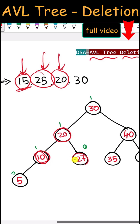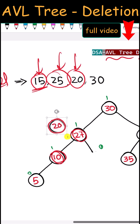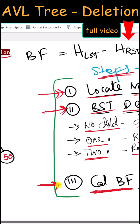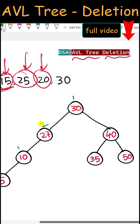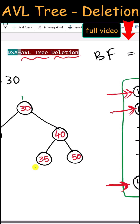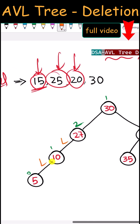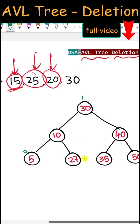We replace node 20 with its in-order successor and then delete that node. After recalculating balance factors, one node's balance factor is out of range, so we must perform a rotation. This is an LL case, requiring one right rotation: 27 is dragged down, 10 becomes the root, and 5 goes up. The tree is now balanced.